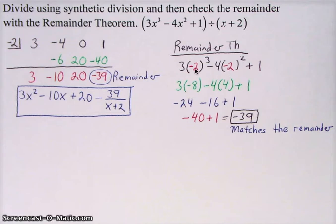If you then do the math, so negative 2 to the third is negative 8. Negative 2 squared is 4. This times this is negative 24. Negative 16. This right here would be negative 40. Plus 1 is negative 39.